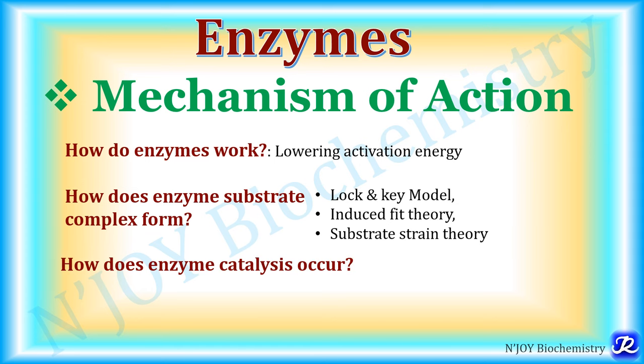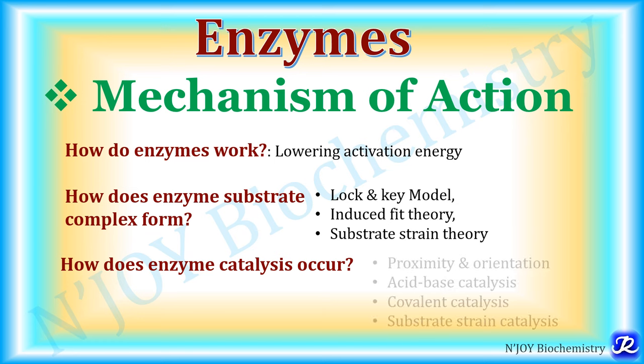How does enzyme catalysis occur? Enzyme catalysis occurs by: proximity and orientation, acid-base catalysis, covalent catalysis, and substrate strain catalysis. The mechanism of action of enzyme answers three important questions: how do enzymes work, how does the enzyme-substrate complex form, and how does enzyme catalysis occur.